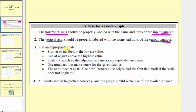Three, use an appropriate scale. Start at or just below the lowest value and at or just above the highest value. Scale the graph so the adjacent tick marks are equal distance apart. Use numbers that make sense for the given data set. The axes meet at the origin zero comma zero. We can use the slash marks between the origin and the first tick mark if the scale does not begin at zero.